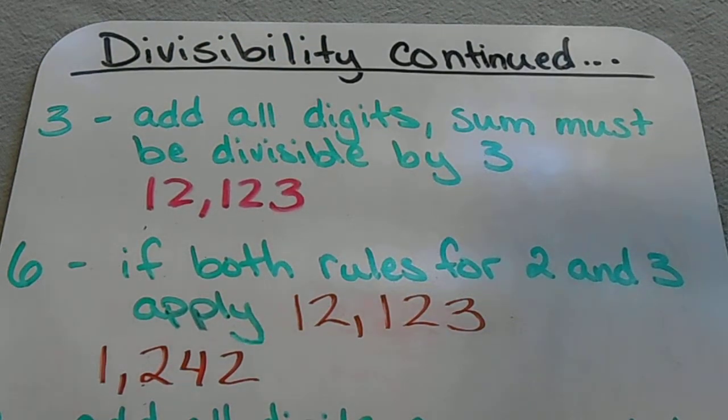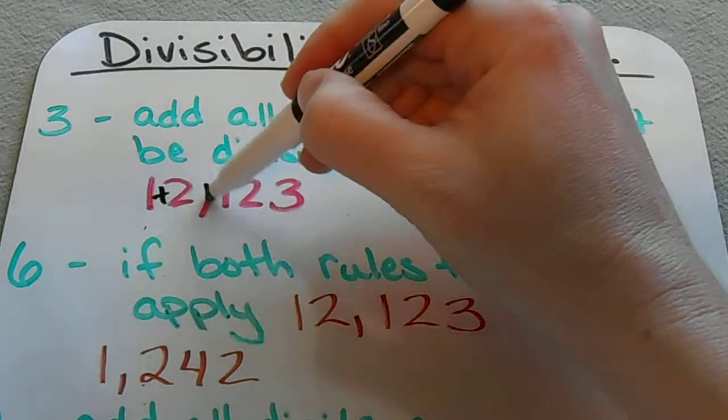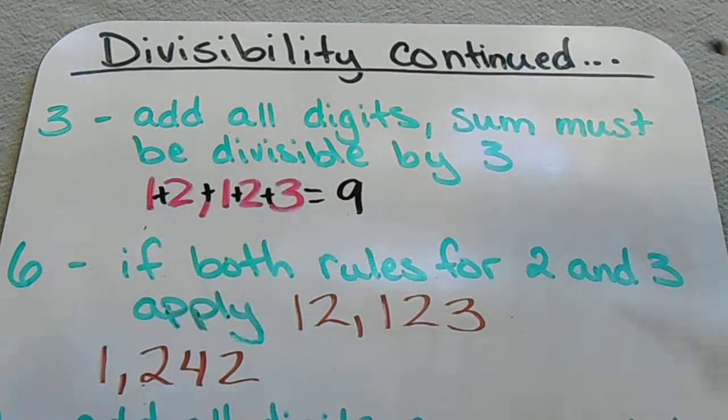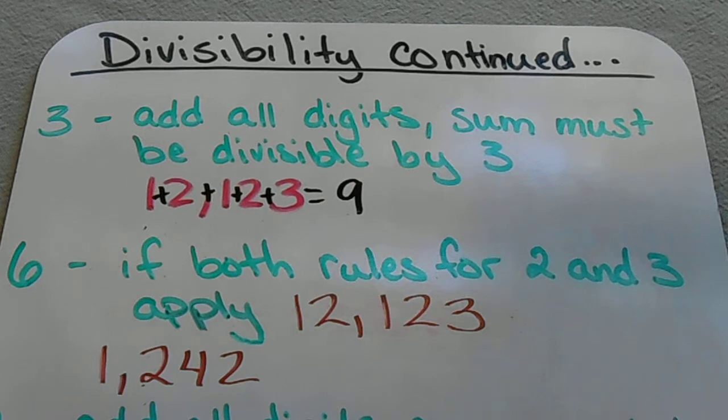If a number is divisible by 3, what you'll do is add up all of the digits. If that sum is divisible by 3, then the whole number is divisible by 3.